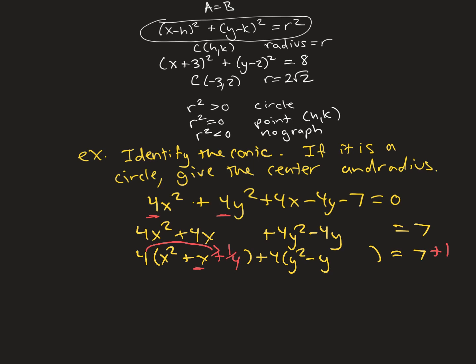To complete the square, you take half of the linear coefficient. In this case, half of 1 is 1/2, and I'm going to square it, so adding 1/4. But how have I really changed that side? I've really changed that side by 4 times 1/4, or by 1. Same here, half of -1 is -1/2, squared is 1/4. I've really changed the side by adding 1. Now let's write the perfect square. It was (x + 1/2)² + 4(y - 1/2)² = 9.